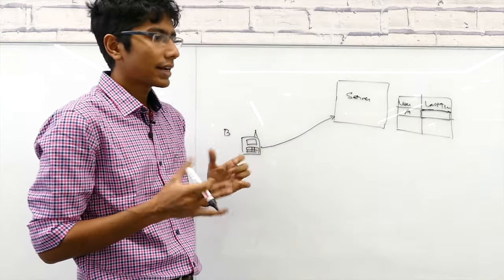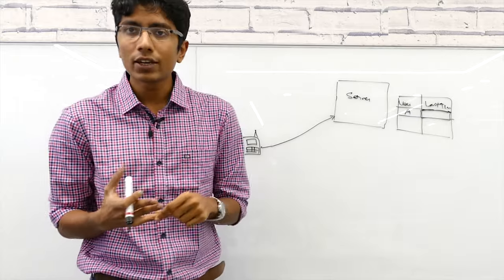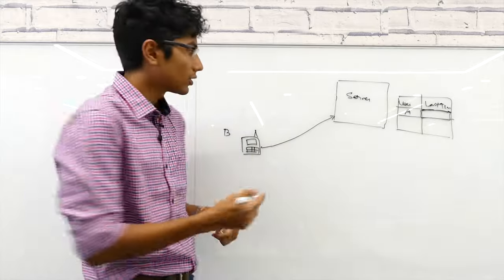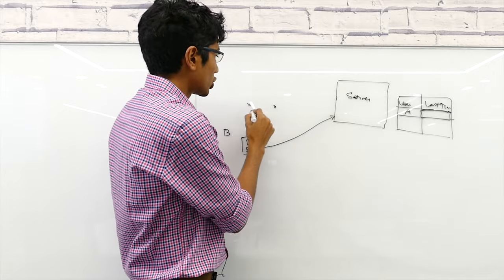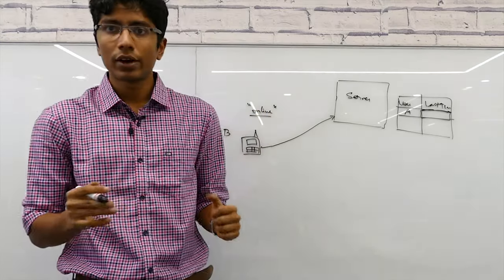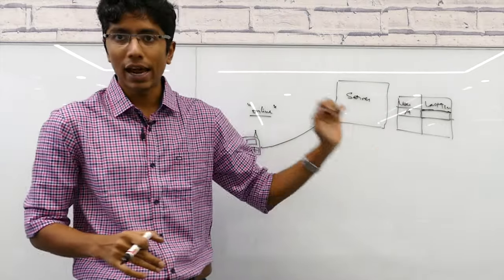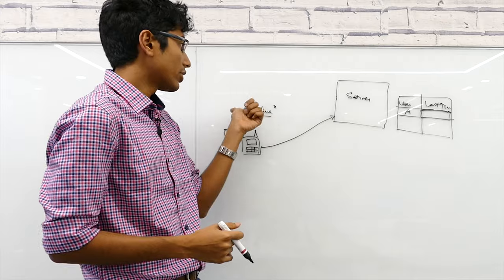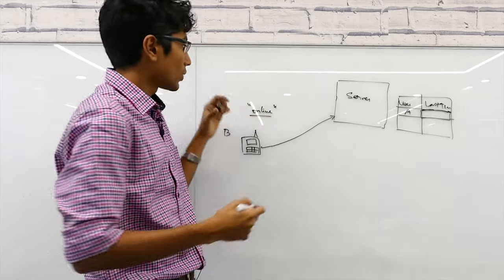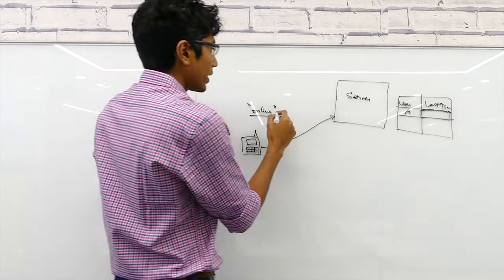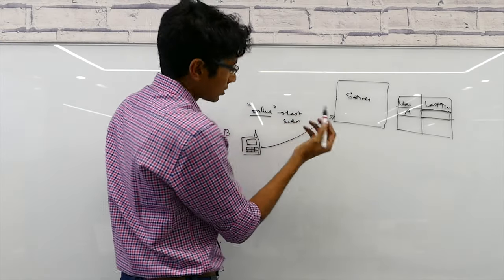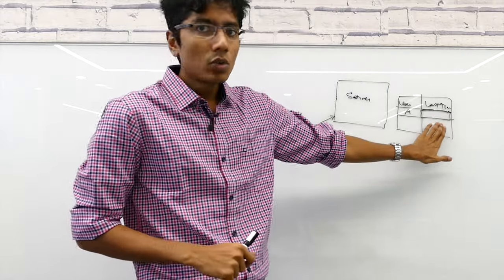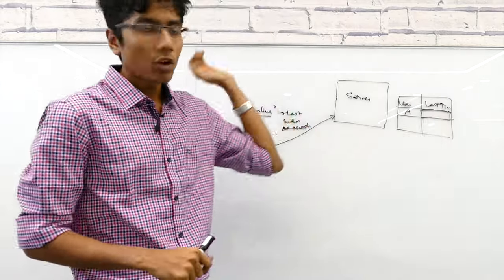One key detail: if A was online three seconds ago, B shouldn't be told they were online three seconds ago. Instead, the tag should show 'online' — probably A just hasn't done any activity in the last three seconds. You can keep this threshold to anything you like, maybe 10 or 15 seconds. The important thing is the user is either shown as online or as last seen at least, say, 20 seconds ago.